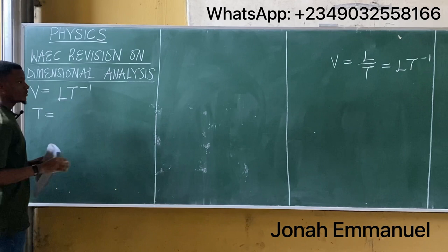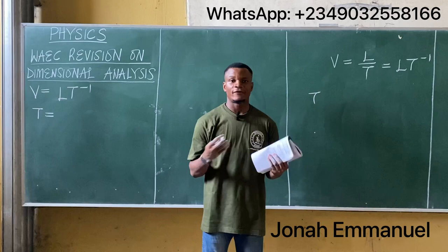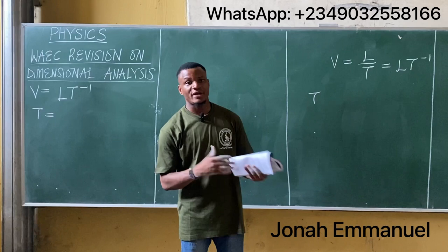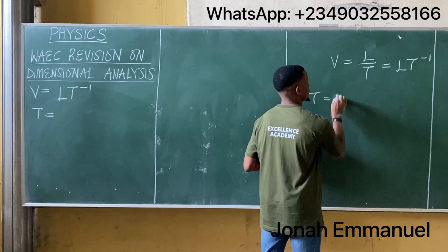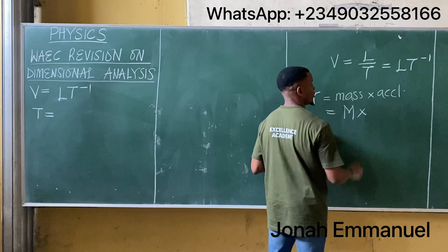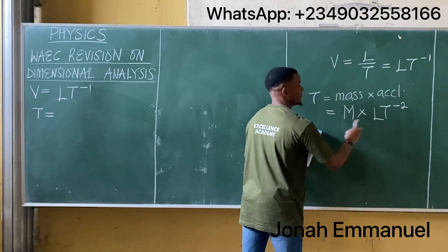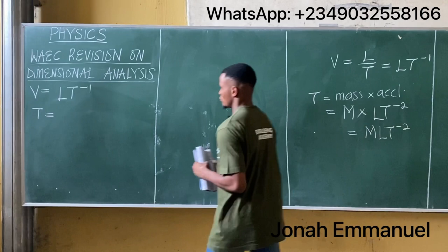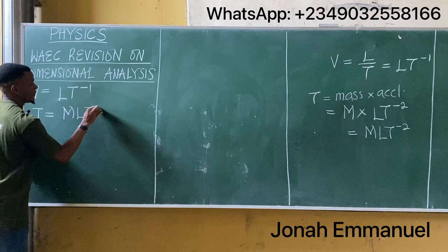The second parameter given is tension t. Let's get the dimension for tension. Tension is simply the force that acts on a stressed string, so tension and force have the same dimension. Force equals mass times acceleration, so the dimension for mass is capital M, and for acceleration the dimension is L T to the power minus two. Combining these gives the dimension for tension as M L T to the power minus two.